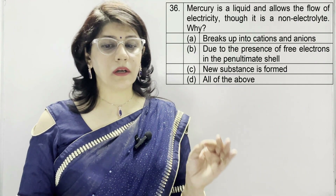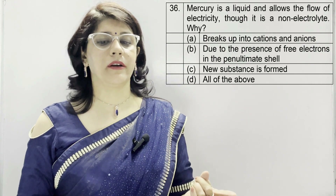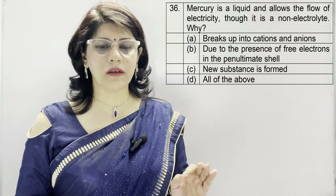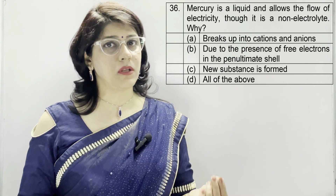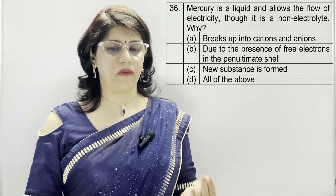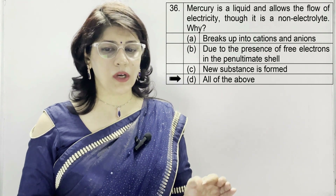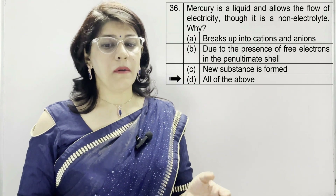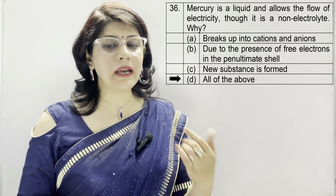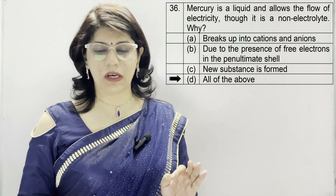Question number 36: mercury is a liquid and allows the flow of electricity though it is a non-electrolyte. Why? A: breaks up into cations and anions. B: due to the presence of free electrons in the penultimate shell. C: new substances are formed. D: all of the above. The correct option is B — due to the presence of free electrons in the penultimate shell. Mercury, being a liquid and non-electrolyte, still allows the flow of electricity because of free electrons in the penultimate shell.